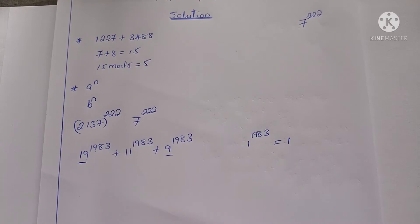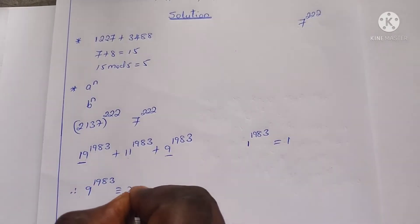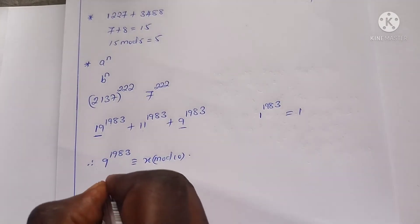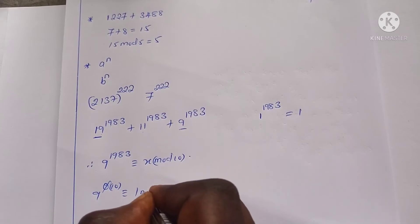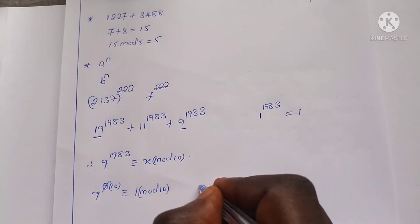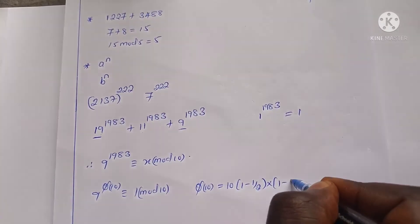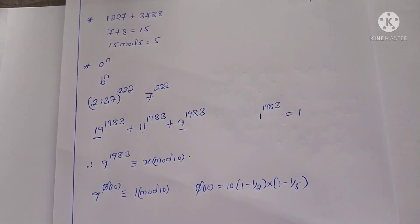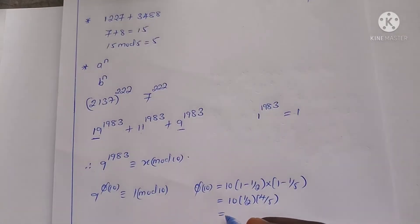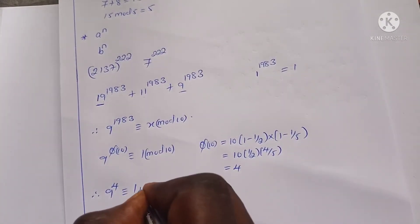Let's call that unit digit x. Therefore, 9^1,983 is congruent to x mod 10. From Euler's theorem, since 9 and 10 are co-prime, 9 raised to the power φ(10) must be congruent to 1 mod 10. We know that φ(10) equals 10 × (1 − 1/2) × (1 − 1/5), since 2 and 5 are the only prime factors of 10, which simplifies to 4. Therefore, 9 raised to the power 4 is congruent to 1 mod 10.